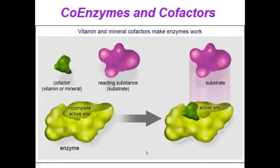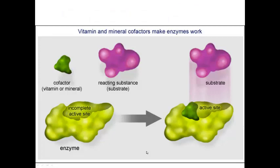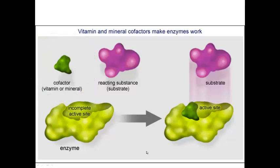Many enzymes require a non-protein helper called a cofactor. This will bind to the active site and function in catalysis. Some cofactors are inorganic, such as zinc, iron, or copper. If a cofactor is an organic molecule, such as most vitamins, it is called a coenzyme. Without the cofactor or coenzyme, the enzyme can't bind the substrate into the active site, so the reaction cannot take place. Most vitamin deficiencies happen this way.